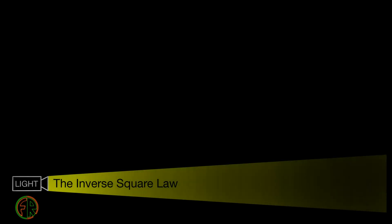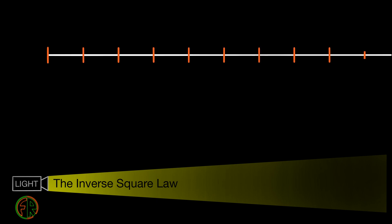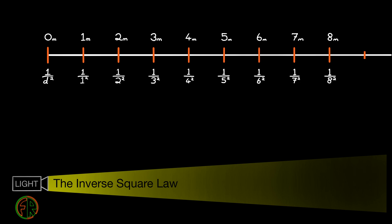Hard cut to the diagram. We have a light shining and we are observing its fall off from a side-on point of view. We'll keep it simple and use increments of one meter. The equation for calculating the intensity of the light at a distance is one over the distance squared. Let's run the numbers and get the fall off as fractions first.